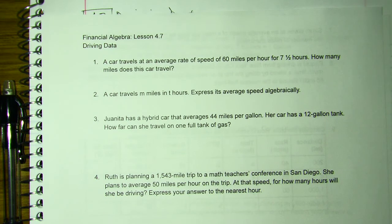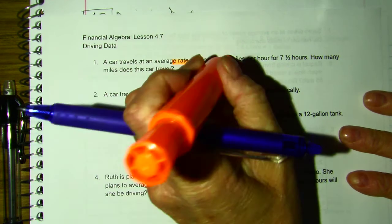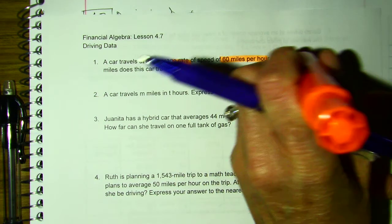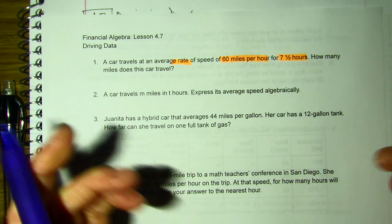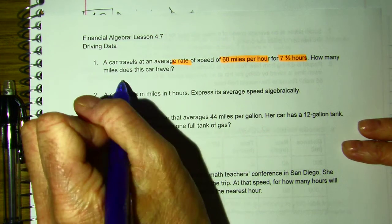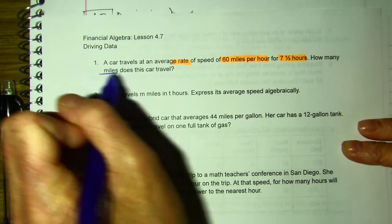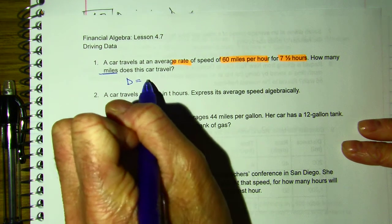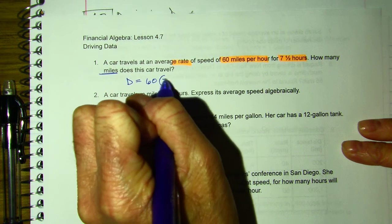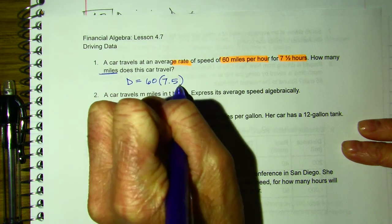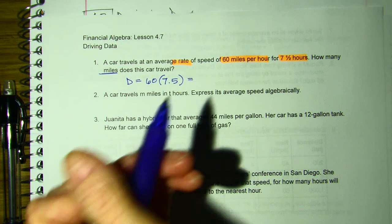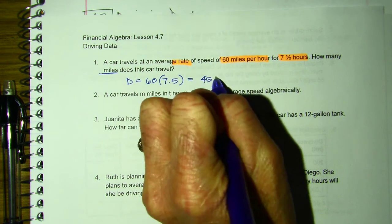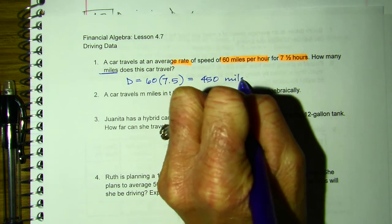So number one, a car travels at an average rate of 60 miles per hour for seven and a half hours. How many miles does this car travel? So distance equals 60 miles per hour times 7.5 hours, and you get a total of 450 miles.